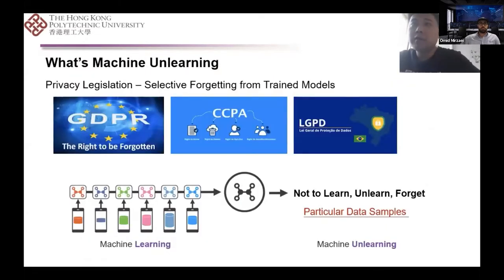Recent legislation, for example GDPR, CCPA, and LGPD, require organizations to give the ability of selectively forgetting from trained models in policy and technology. Machine unlearning is such a process. Generally speaking, machine unlearning is the reverse direction of machine learning. The goal of machine unlearning is to make the model behave as if it has never seen those forgotten data samples during training.